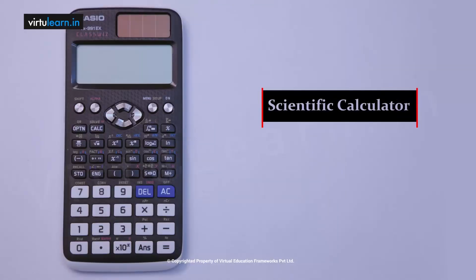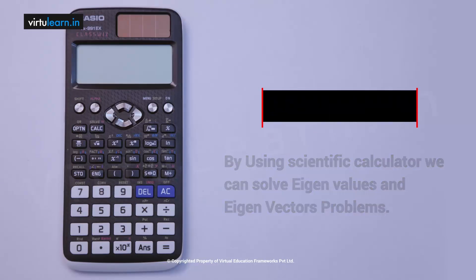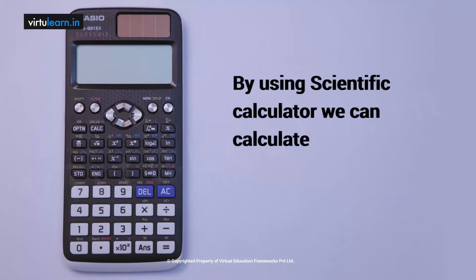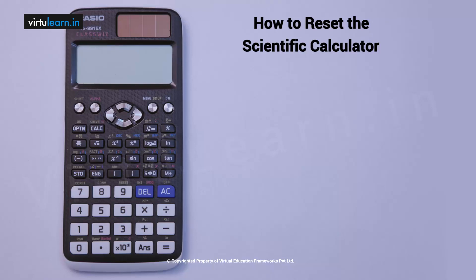This is a scientific calculator. If you want to solve eigenvalues and eigenvectors problems using a scientific calculator, we can calculate A square, A cube, determinant of A, adjoint A, and all those things. To reset the scientific calculator, press shift 9.